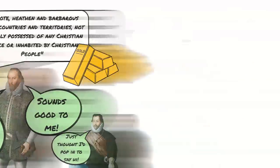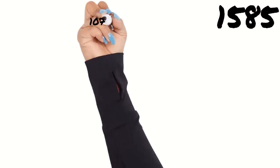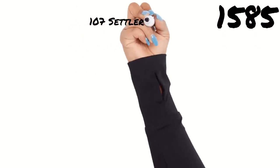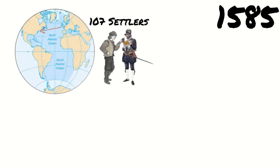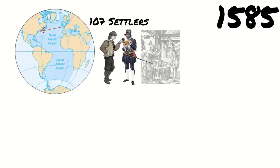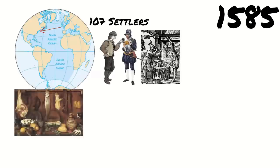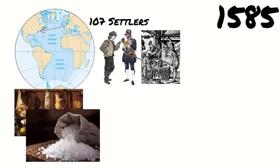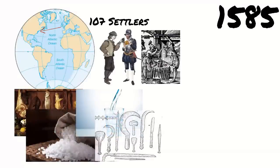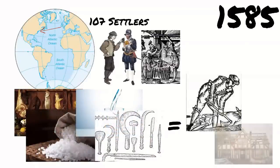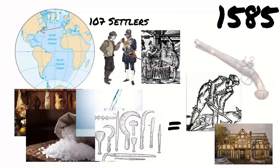In 1585, 107 colonists, mainly men, set out for Roanoke in Virginia. The group was mainly made up of soldiers and sailors, although there were a few craftsmen and farmers. They stocked their ships with food and salt for preserving the food, fresh water for the voyage, tools and equipment to begin farming and constructing buildings, and weapons to protect themselves.